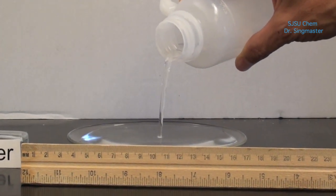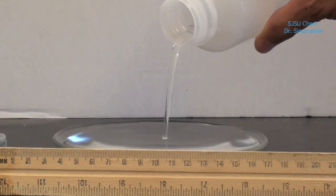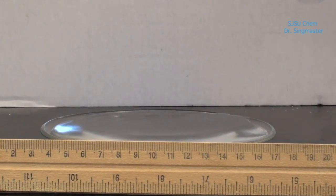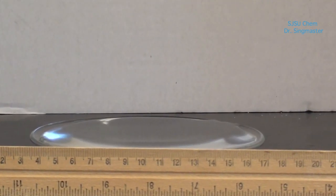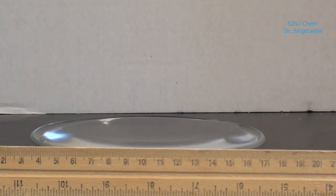Once it's full, you want to use the ruler to measure the diameter of the water surface, not the diameter of the watch glass, but rather the diameter of the water surface.